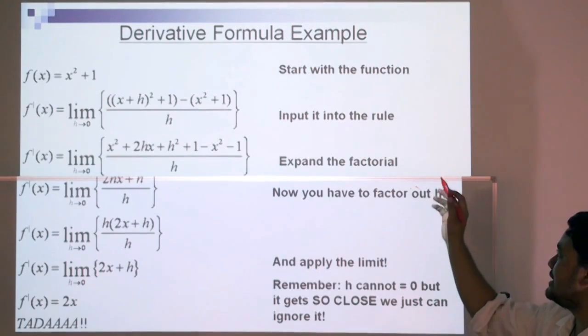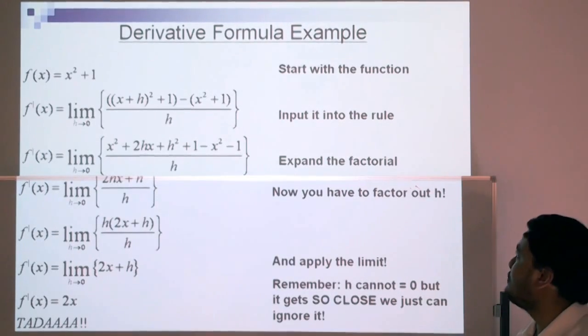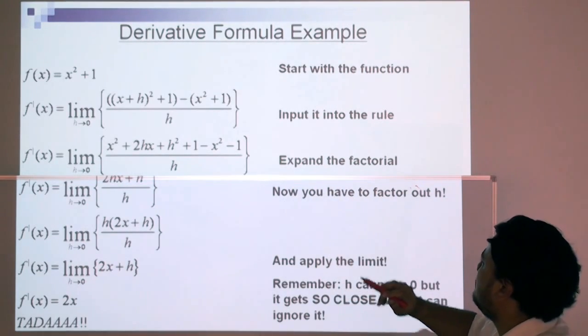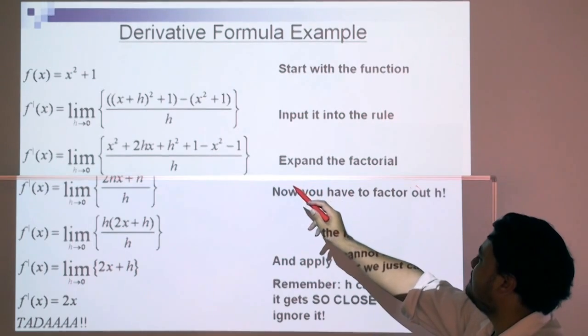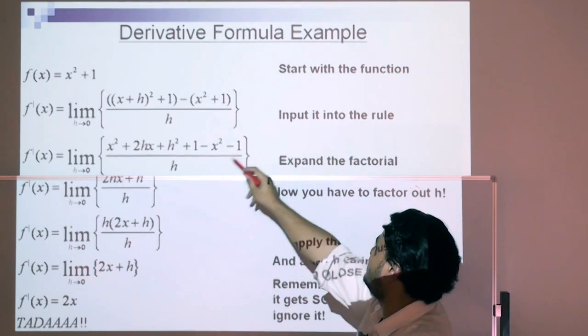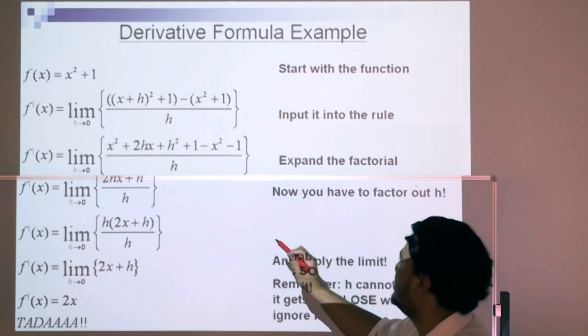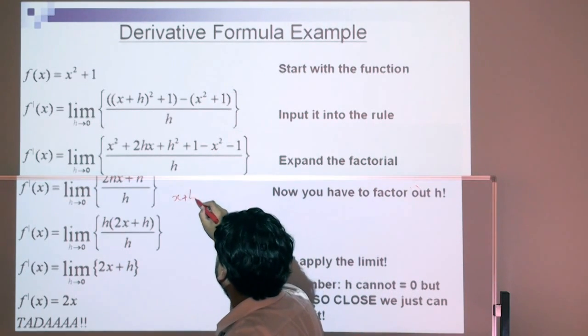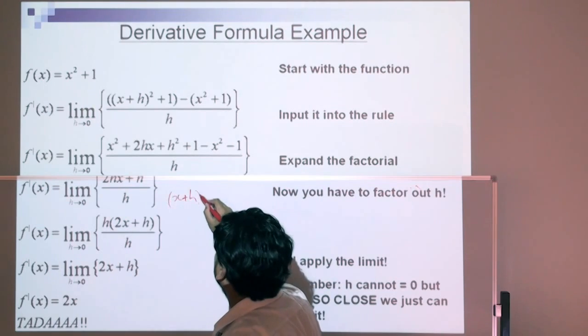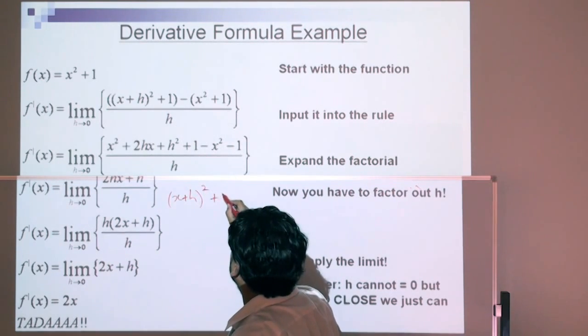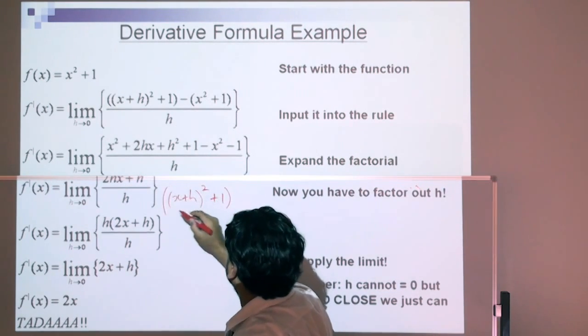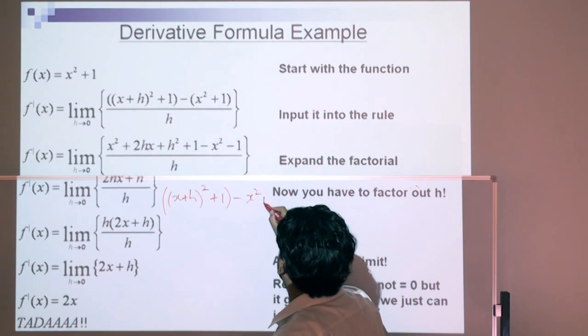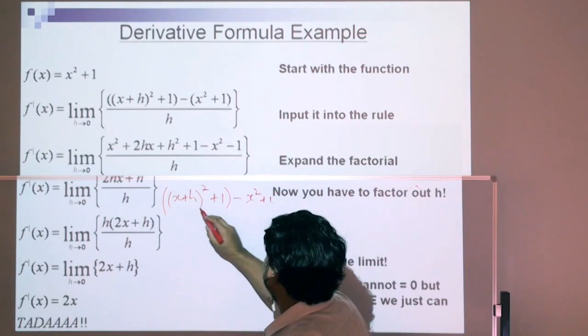Here's our example using the derivative formula. We have a function x squared plus 1. We're going to find the derivative. We put those terms into the formula. We put the x plus h, add that h there, and that's x squared, we square this, then we plus 1, brackets here, minus x, the term, we take the whole term, x squared plus 1.